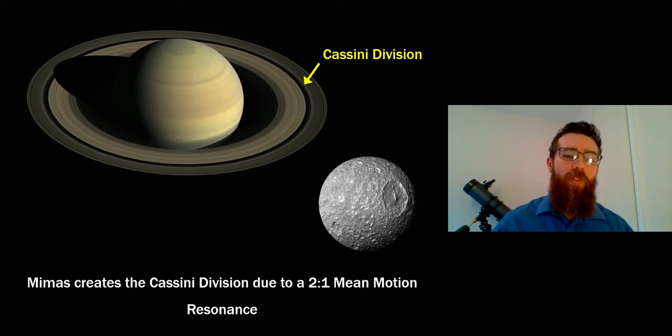So one example of that, probably the best example, is this moon, Mimas. So this particular moon orbits once every two orbits of a particle in the Cassini division. So you get this mean motion resonance because the orbital periods of a ring particle in the Cassini division and the moon are some ratio of one another. It just happens to be a two to one ratio which is a fairly strong resonance.